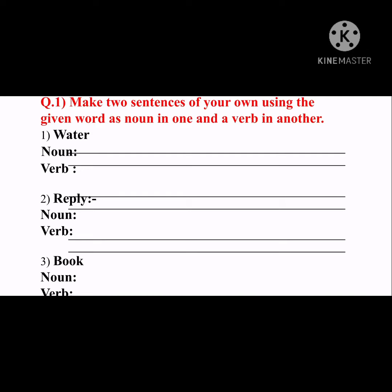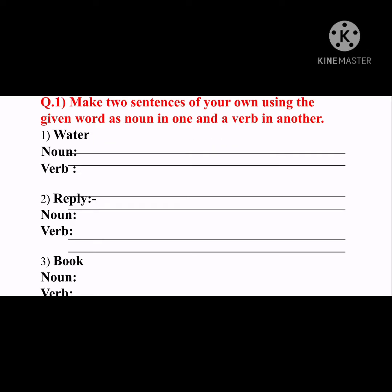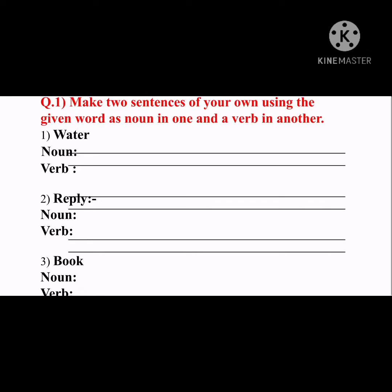Question number one: make two sentences of your own using the given word as a noun in one and a verb in another. We are expected to write two sentences — once the word should act as a noun, and in another sentence the word should act as a verb. Let us solve the first one: 'water.' Noun sentence: 'Save water.' Verb sentence: 'Let's water the plant.'